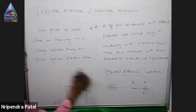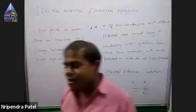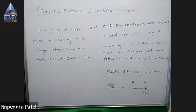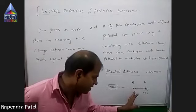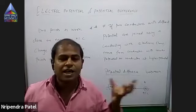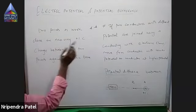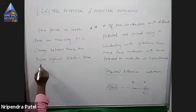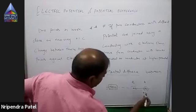The word potential difference is used a lot, especially in Class 10 and current electricity. Potential difference is what matters, not electric potential alone. So, the potential difference between A and B is the work done in moving plus 1 coulomb charge between those two points against the electric force.